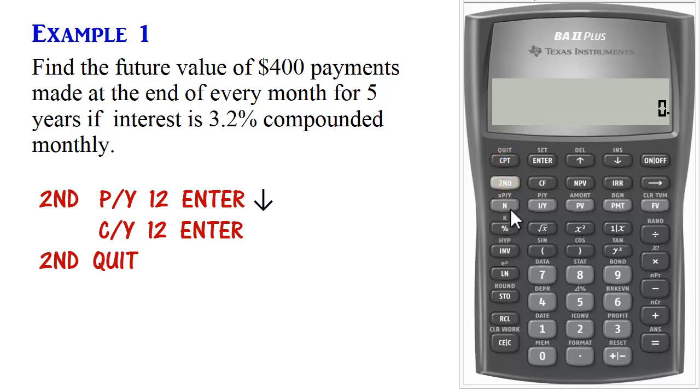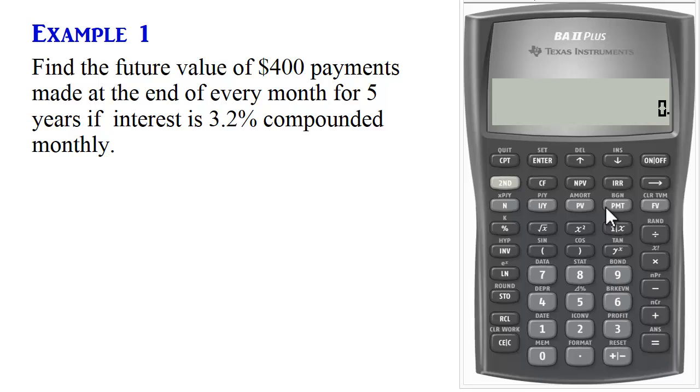Next, we enter the time value of money values and then compute future value. So for N, we have 5 years and payments are made at the end of every month. So total number of payments will be 5 times 12, which is 60 payments in total. So we press N.